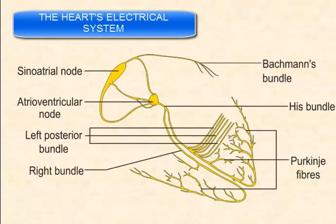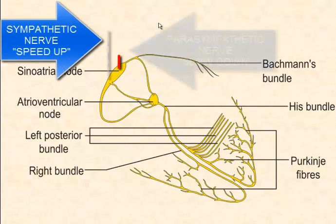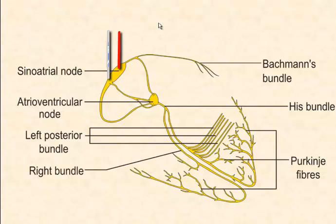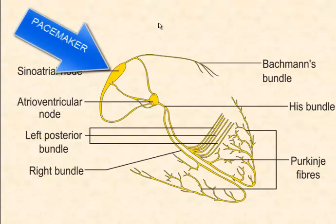Here we see the nerves without the actual heart muscle. The brain coordinates contraction of the heart by sending messages to the pacemaker via two nerves: the sympathetic nerve and the parasympathetic nerve. Depending on the number of impulses coming in along the nerves, the sinoatrial node, also known as the pacemaker, will set the pace by transmitting electrical impulses through a series of nerves embedded in the heart muscle.